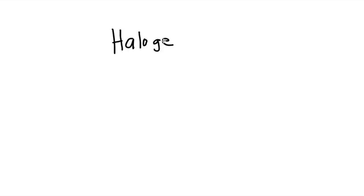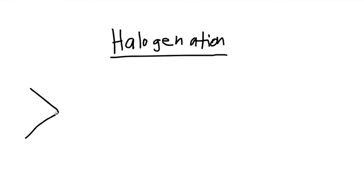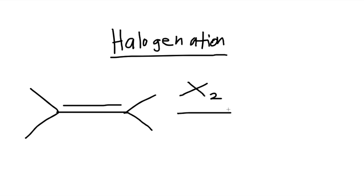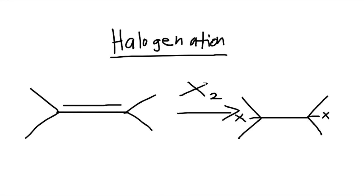Lastly, the third major reaction is called halogenation. This comes from a halogen element. So if we have a structure like this — an alkene — and it is added with any halogen element, two of them, we'll get a structure like this with the halogen elements on the sides. Again, this is an addition reaction because we're adding two halogen elements, and the reaction is making that double bond into a single bond.